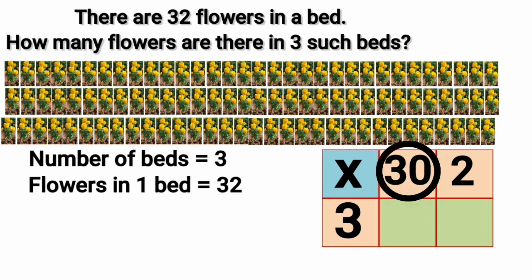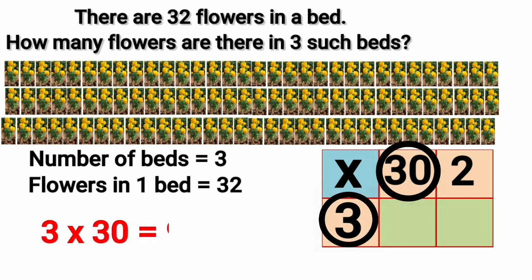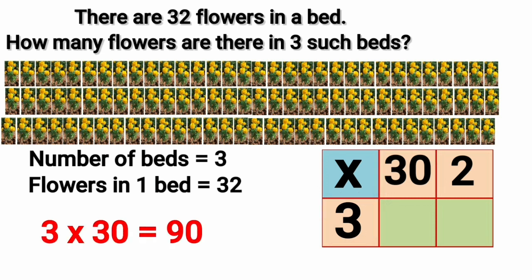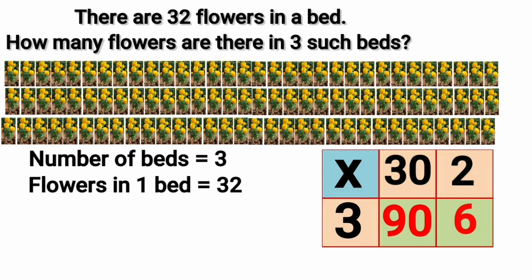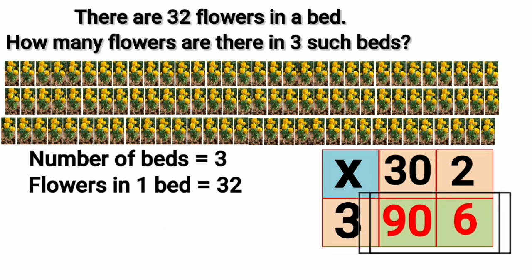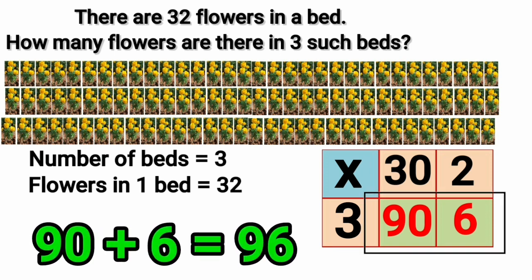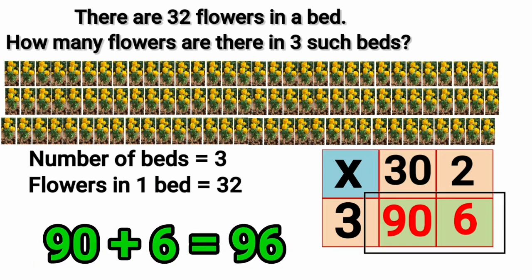We will split 32 as 30 plus 2 and write it in a grid. We will multiply 3 and 30, which is equal to 90. 3 multiplied by 2 is equal to 6. So 90 plus 6 will be equal to 96. Yes, 96 flowers are there in 3 beds.